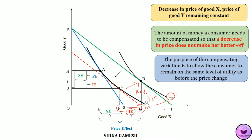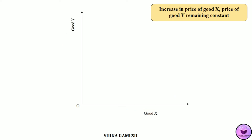The consumer is in a better off situation because of the increase in real income. Due to this increase in purchasing power, the consumer is purchasing an additional FG amount of good X, which is due to the income effect. Next, we shall see the case wherein the price of good Y remaining the same, what happens when the price of good X increases.